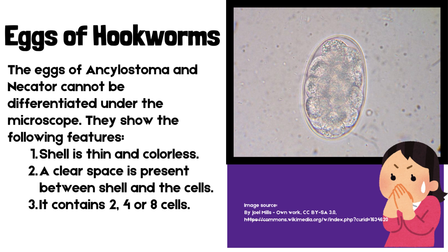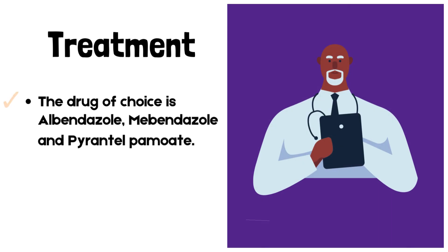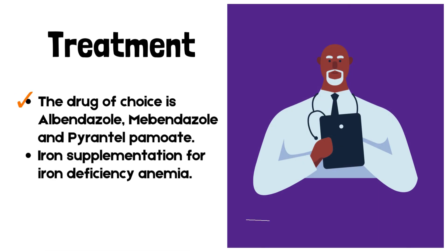Eggs of hookworms show the following features: the shell is thin and colorless, a clear space is present between the shell and the cells, and it contains 2, 4, or 8 cells. Treatment: The drug of choice is albendazole, mebendazole, and pyrantel pamoate. Iron supplementation is given for iron deficiency anemia.